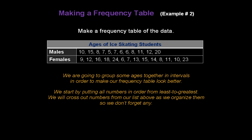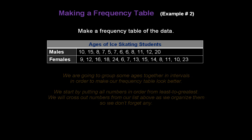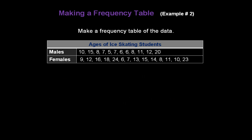We start by putting all numbers in order from least to greatest, crossing out numbers from the list above as we organize them so we don't forget any. The smallest number is five, so we write it down and cross it out. That's the only five. Then three sixes — write them down and cross them out. Three sevens, three eights, one nine.